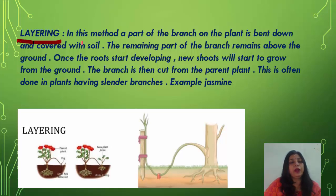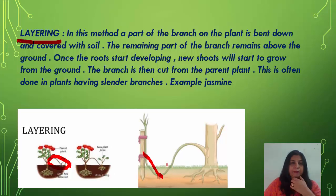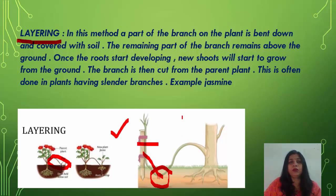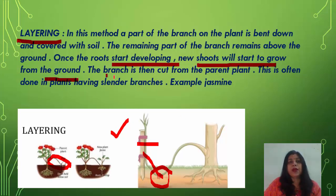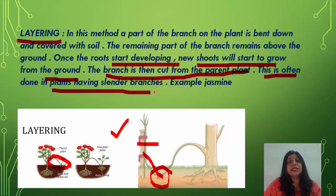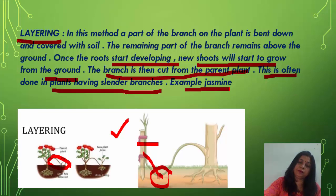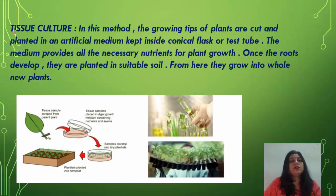Next is layering. A branch from the parent plant is deliberately bent down to the ground and covered with soil, while the remaining part stays above ground. Once roots start developing, new shoots grow from the ground, and the branch is then cut from the parent plant. Layering is often done in plants with slender branches. An example is jasmine.